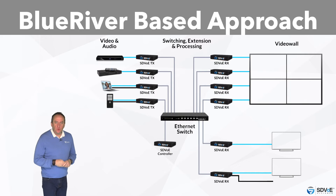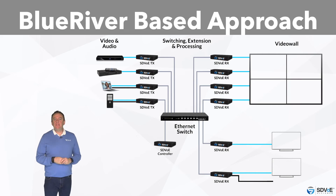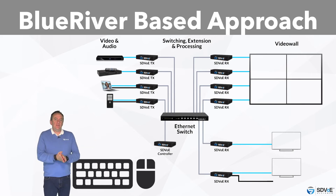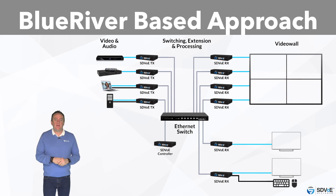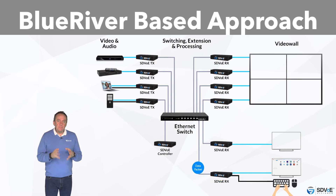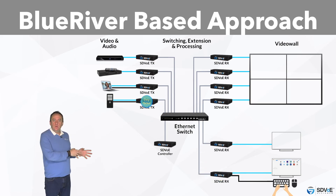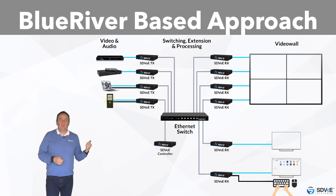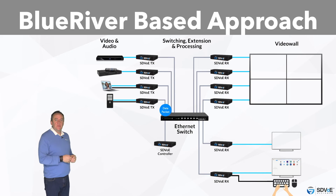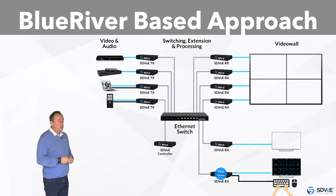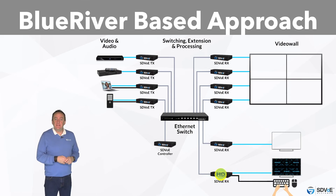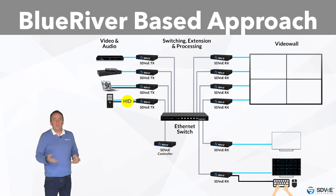For a simpler and more affordable hardware approach, let's investigate how the Blue River chip can manage USB HID signals on its own. When a keyboard or mouse is introduced to an endpoint — in this case a receiver — with the computer being connected to a transmitter, the endpoints themselves act as USB host and device. The SDVoE receiver is a USB host talking to the keyboard and mouse, and the SDVoE transmitter is a USB device talking to the PC, pretending to be a simple keyboard and mouse rather than an SDVoE device.